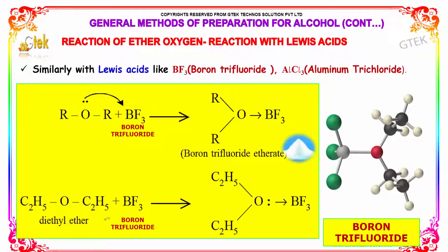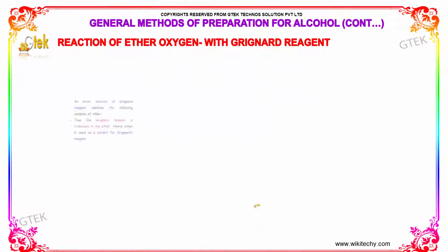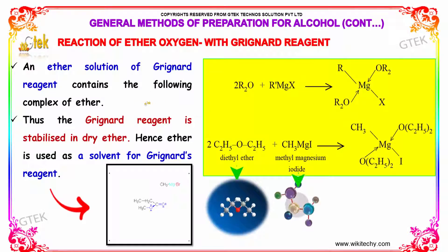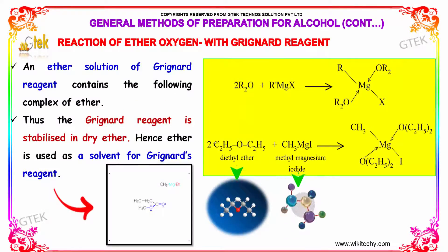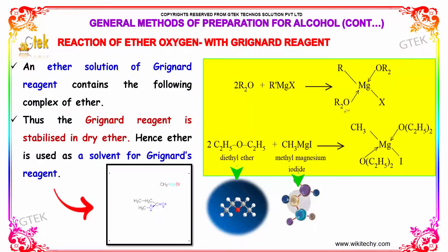Diethyl ether reacts with boron trifluoride to form boron trifluoride etherate. An ether solution of Grignard reagent contains the following complex of ether. Thus, the Grignard reagent is stabilized in dry ether. Hence, ether is used as a solvent for Grignard reagent.